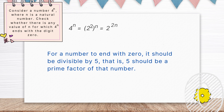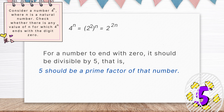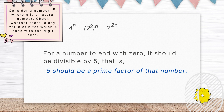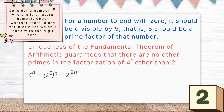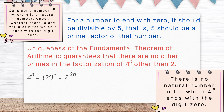Now, for a number to end with 0, it should be divisible by 5 — that is, 5 should be a prime factor of that number, right? But the uniqueness of the fundamental theorem of arithmetic guarantees that there are no other primes in the factorization of 4 raised to the power n other than 2. And hence, there is no natural number n for which 4 raised to the power n ends with the digit 0. Interesting, right?